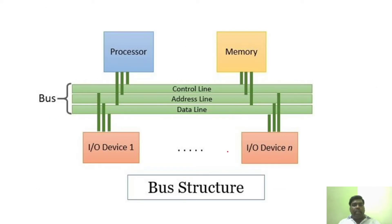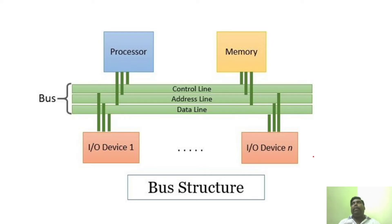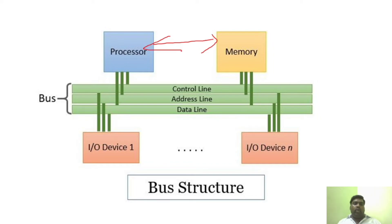You can see the complete bus information inside the computer — the control bus, address line, and data line. All of these are connected to the processor, memory, and input-output devices. Memory and processor will fetch instructions and data, and all the instructions and data can be handled through the address line, control line, and data line.